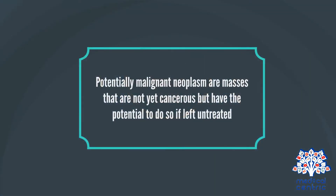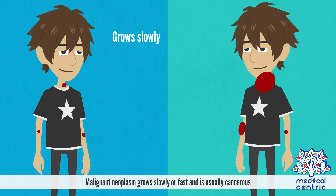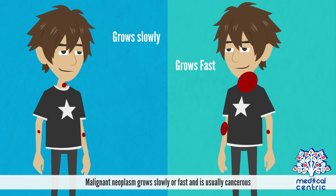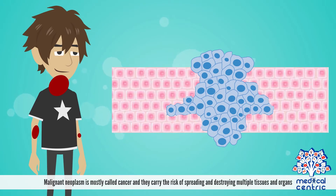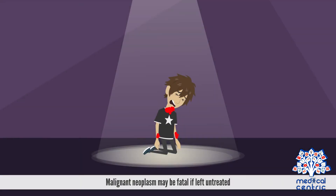Potentially malignant neoplasms are masses that are not yet cancerous but have the potential to become so if left untreated. Malignant neoplasms grow slowly or fast and are usually cancerous. They are mostly called cancer, carry the risk of spreading and destroying multiple tissues and organs, and may be fatal if left untreated.